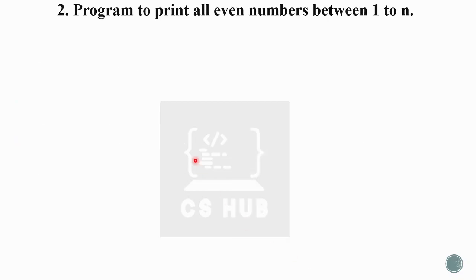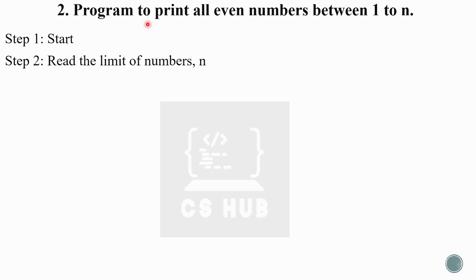Next is another program: print all even numbers between 1 to n. The idea is to check numbers from 1 up to the limit n, and print those that are even. Let's start the algorithm.